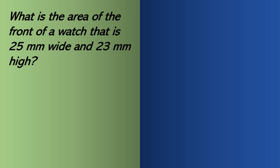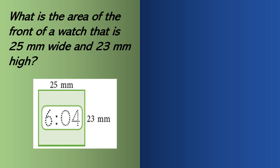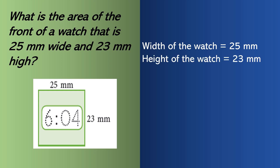Next question: What is the area of the front of a watch that is 25 millimeters wide and 23 millimeters high? The watch is of rectangular shape. The width of the watch is 25 millimeters and the height is 23 millimeters, which represent the length and breadth. So we apply the formula: area equals length into breadth.